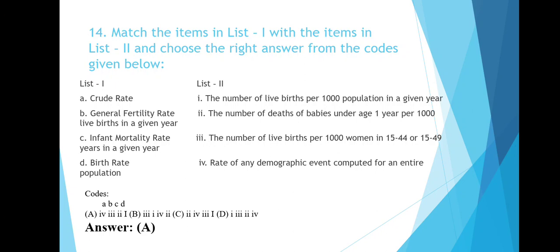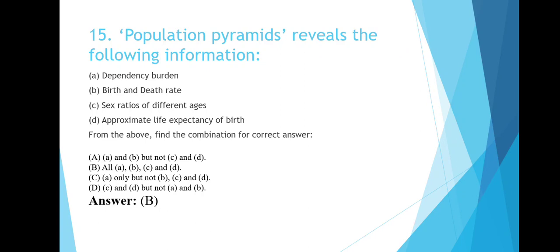Population pyramids reveal the following information: dependency burden, birth and death rate, sex ratios of different ages, and approximate life expectancy at birth. The correct option includes all of the above — dependency burden, birth and death rate, sex ratios of different ages, and approximate life expectancy at birth.